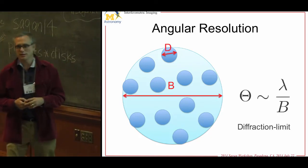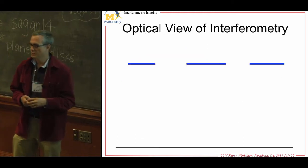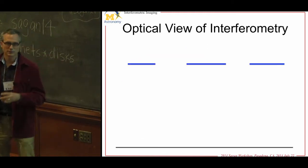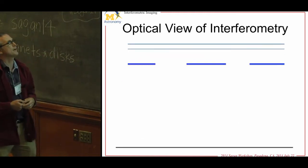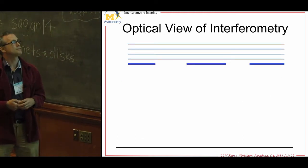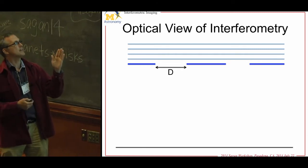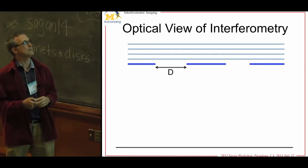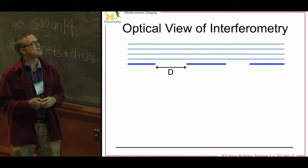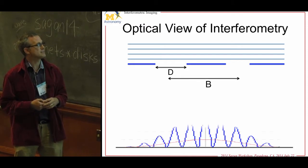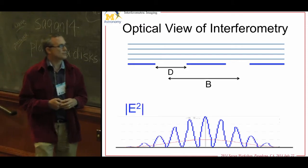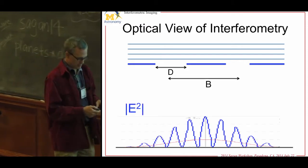With an interferometer, if you take two separate telescopes — Young's two-slit experiment — instead of a single aperture you have two apertures separated by a distance, and you get interference fringes.